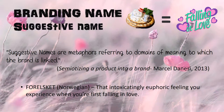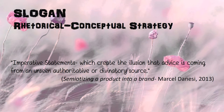For the brand name, we are using Forrest Kitt — a Norwegian word defined as the intoxicatingly euphoric feeling you experience when first falling in love. According to Marcel Dennercy in Semiotising a Product into a Brand, suggestive names are metaphors referring to domains of meaning to which the brand is linked. Through the suggestive name Forrest Kitt, we show that the brand has the power to create this feeling through events with the water cracker, while also indicating that the crackers are originally from Norway.